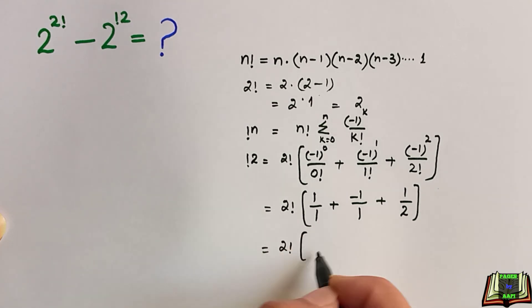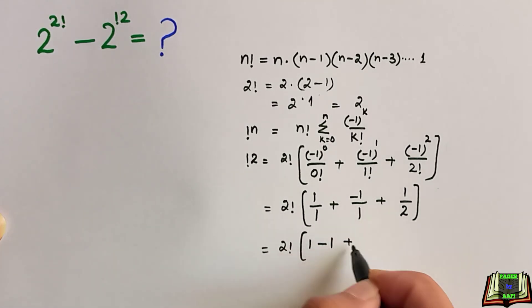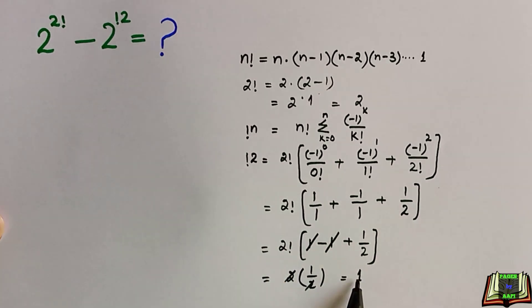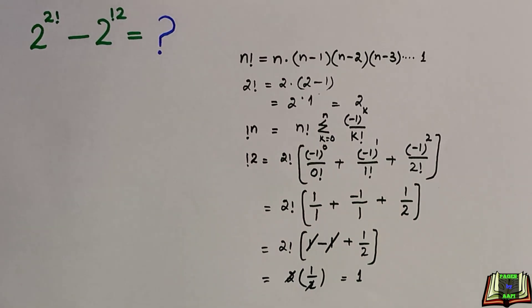Now let's simplify more. 1 over 1 is 1, minus 1 over 1 is -1. These cancel out. 2 factorial is 2 times 1 over 2. The 2s cancel out. So subfactorial of 2 equals 1.